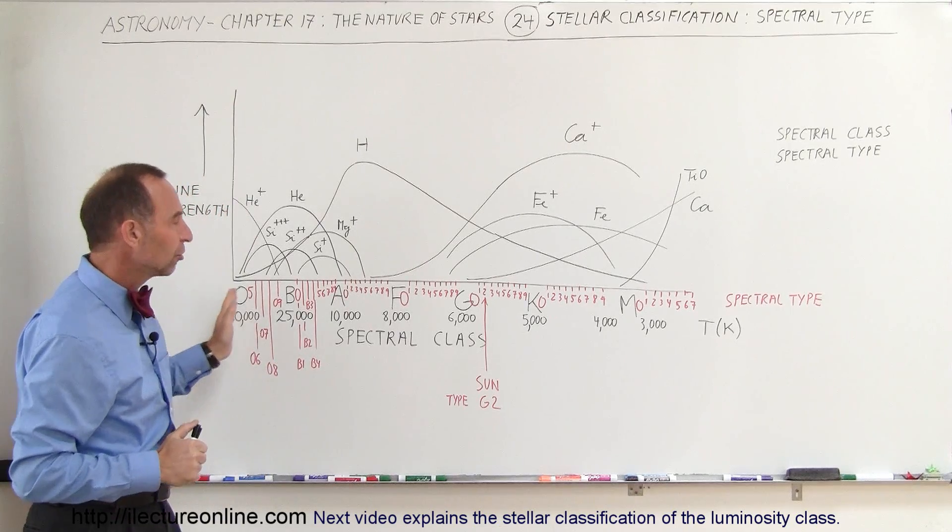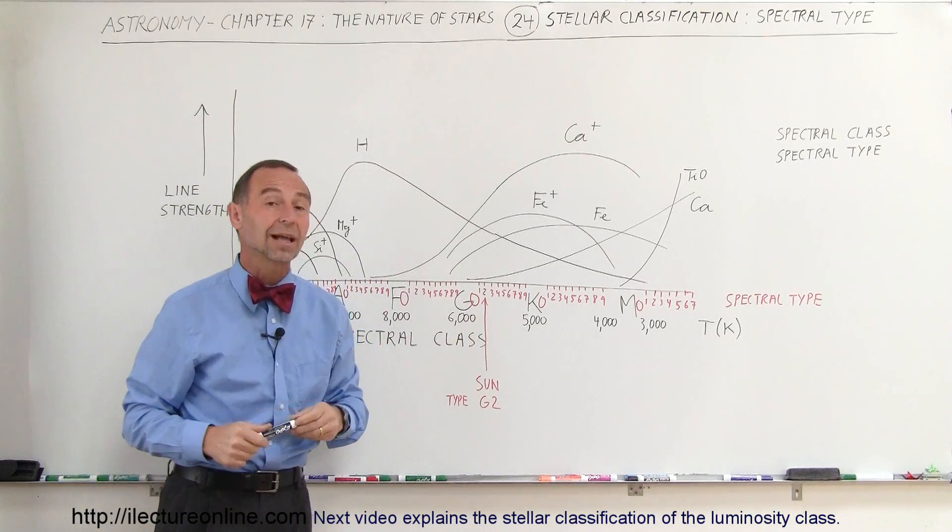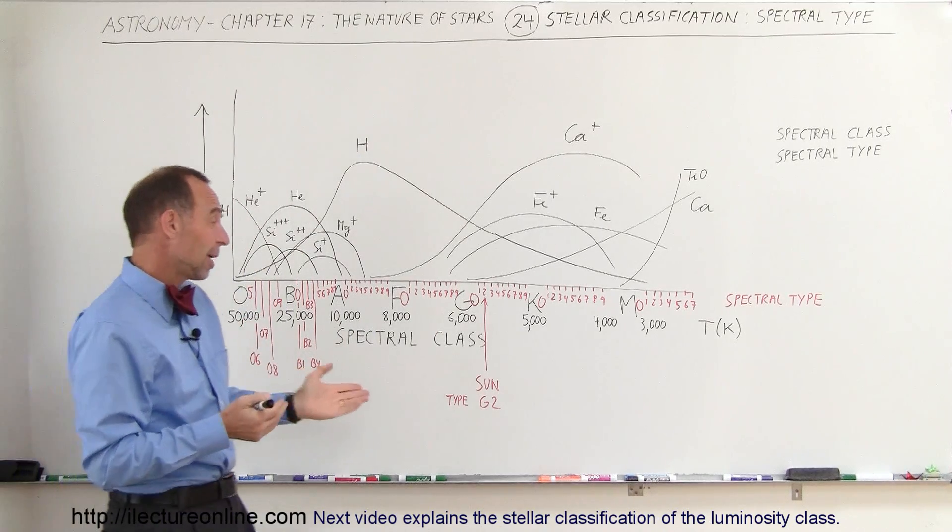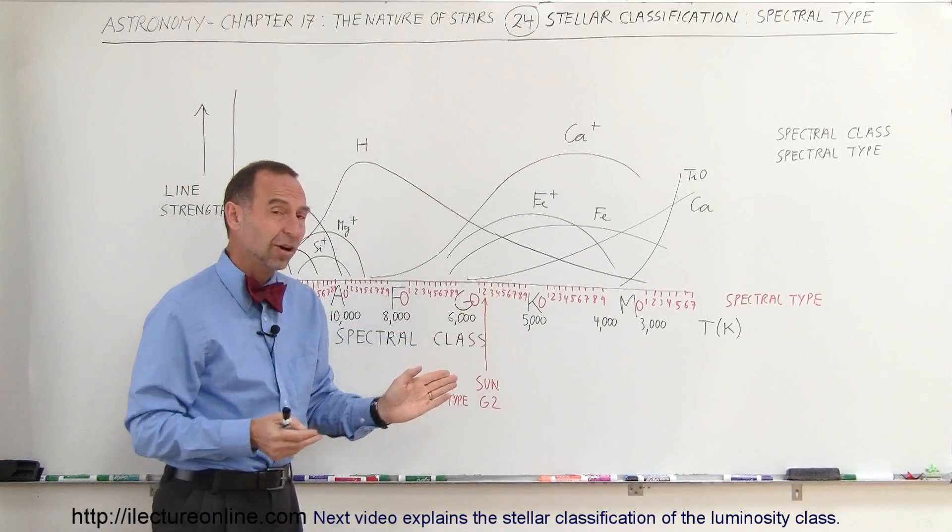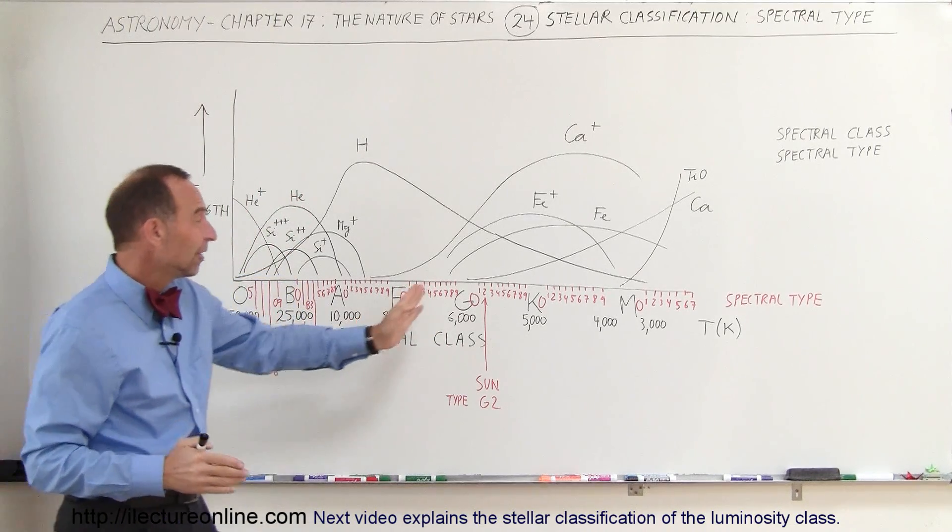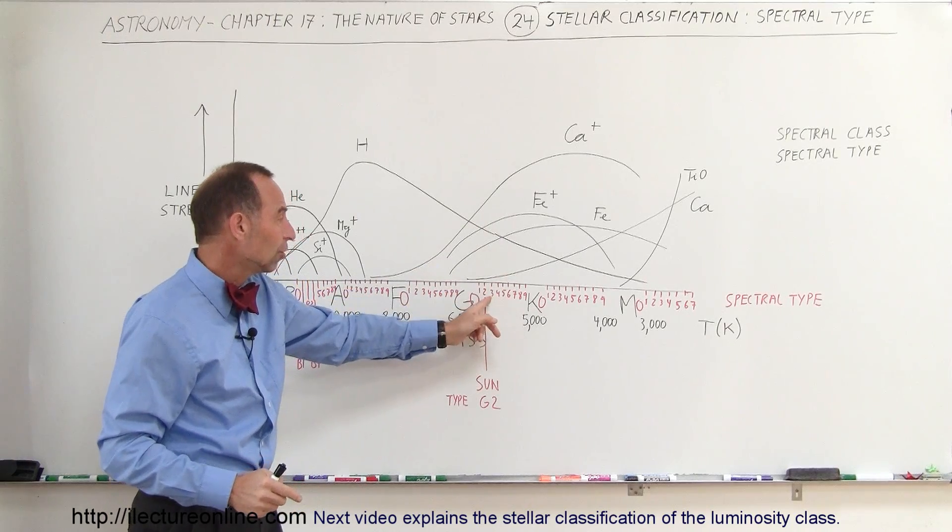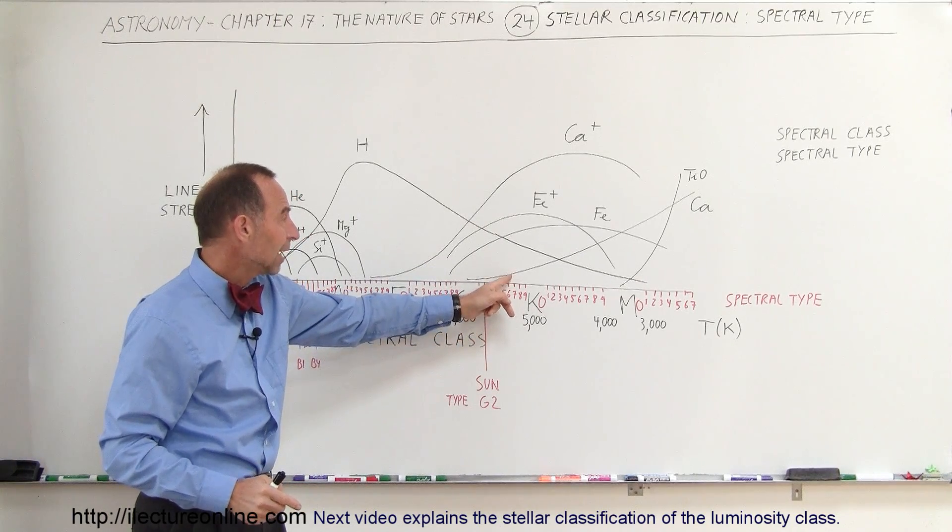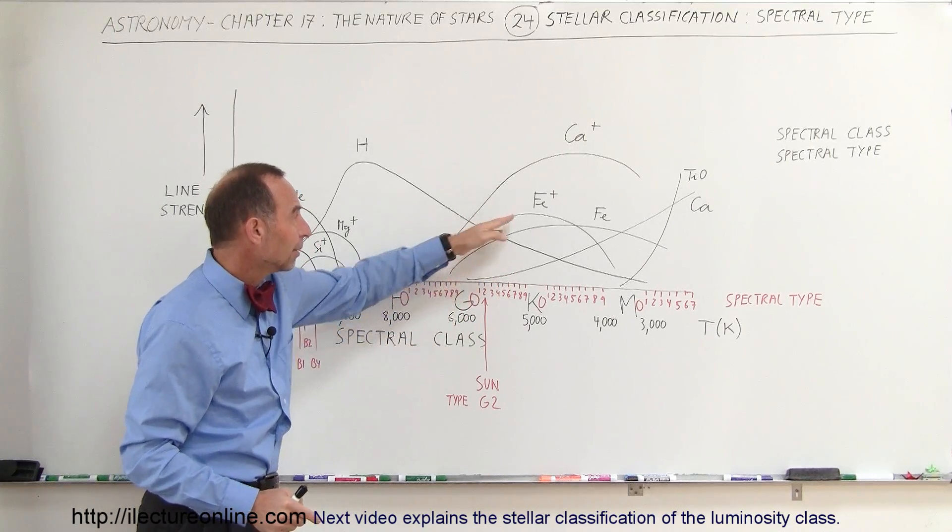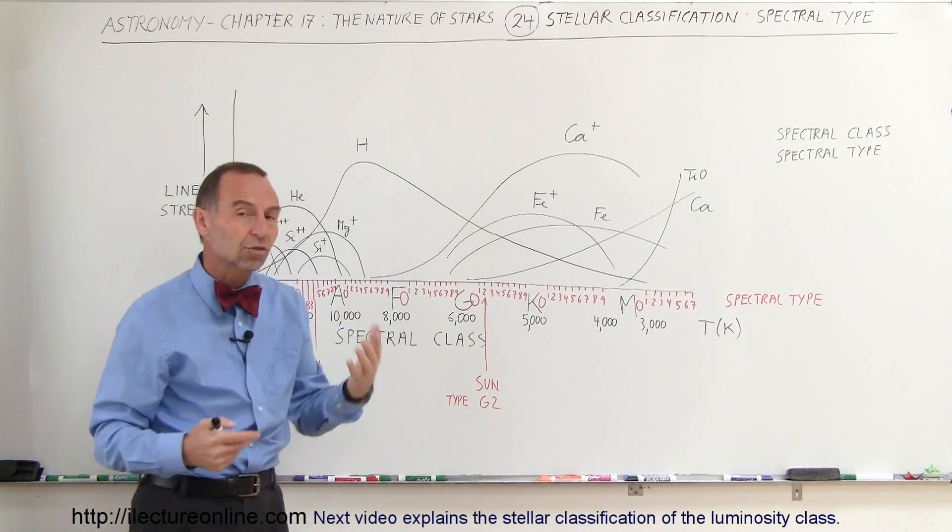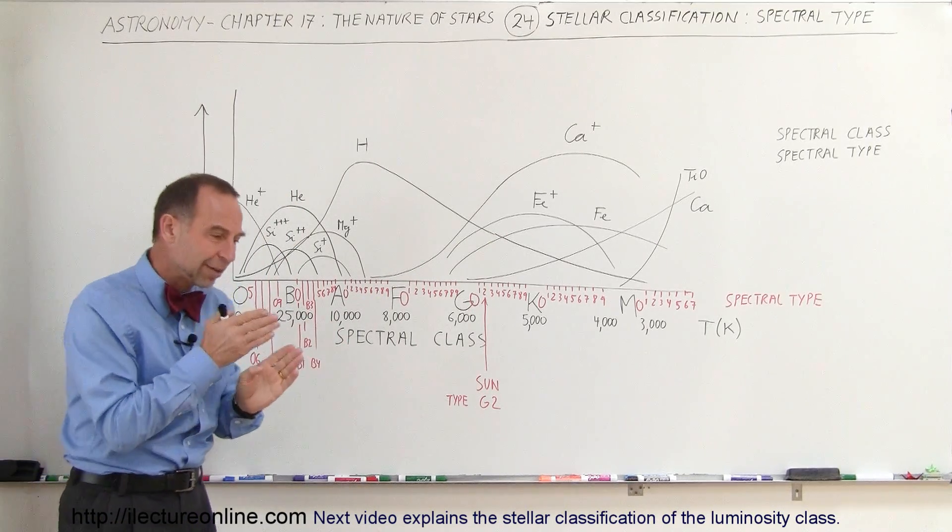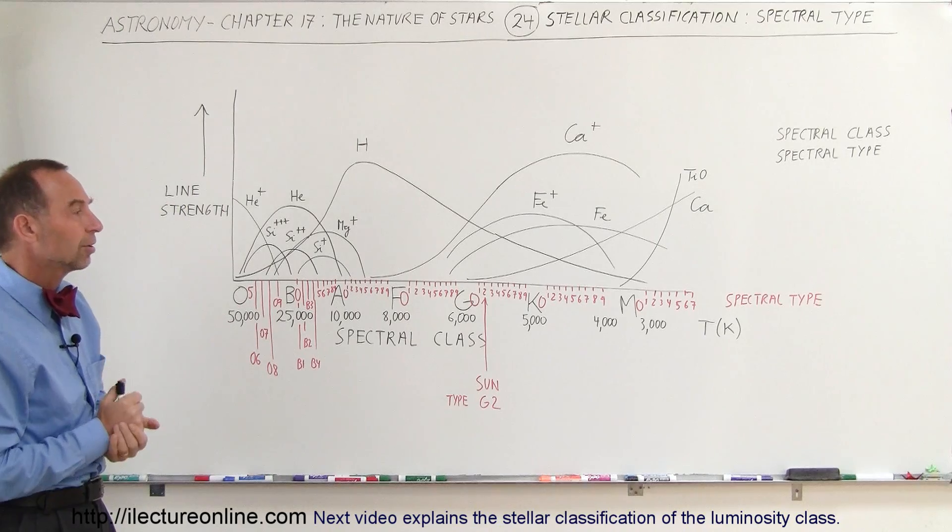So that's what we call spectral types by using the subdivision on the classes. It makes it a lot easier because there's a lot of difference between, for example, a G2 and a G6 star. They're both of the class G, but there's a significant difference in the line strength of the particular elements. Notice that for the G6, the calcium becomes stronger, the hydrogen becomes weaker, and both iron plus one and iron neutral become stronger as well.